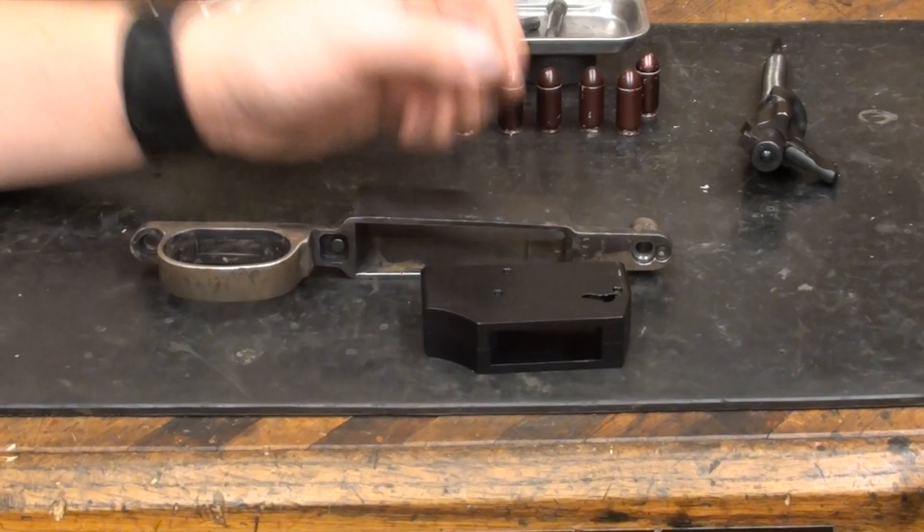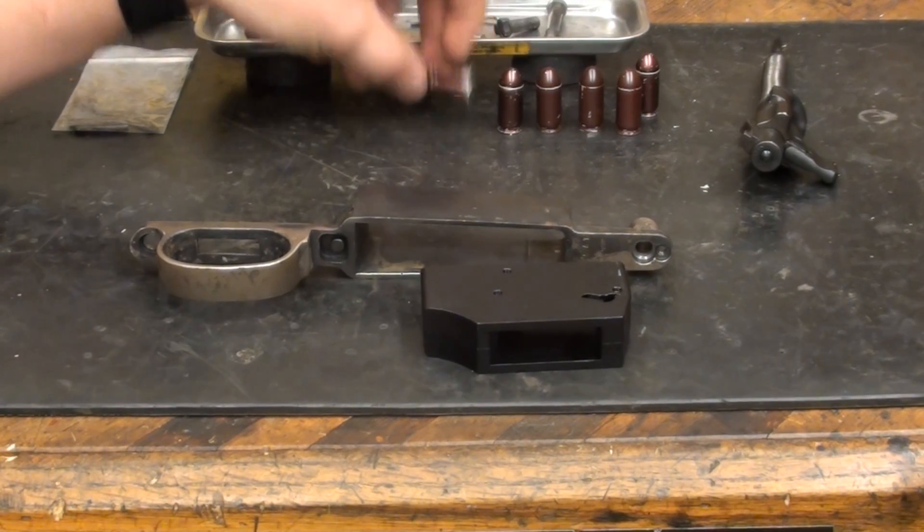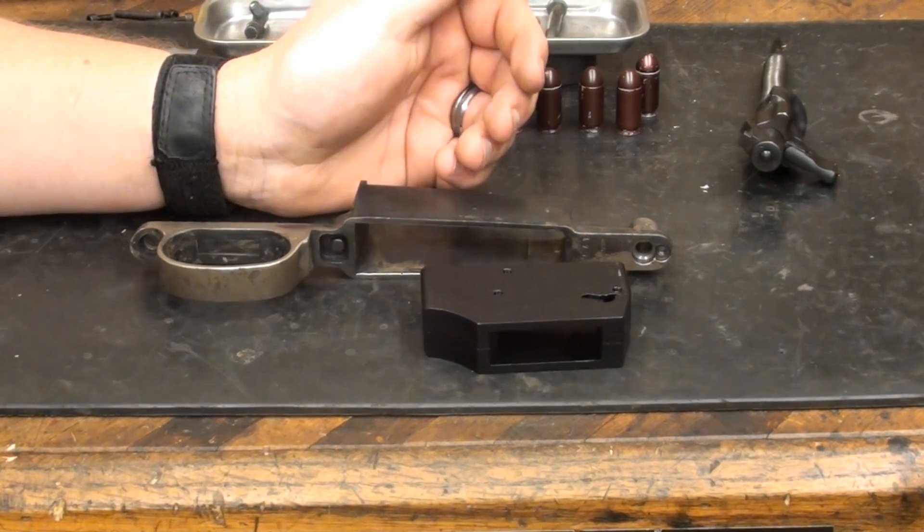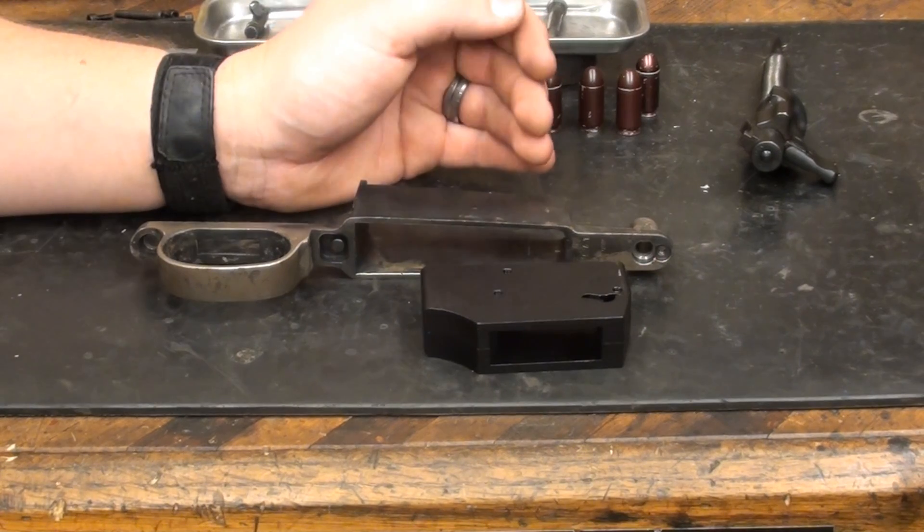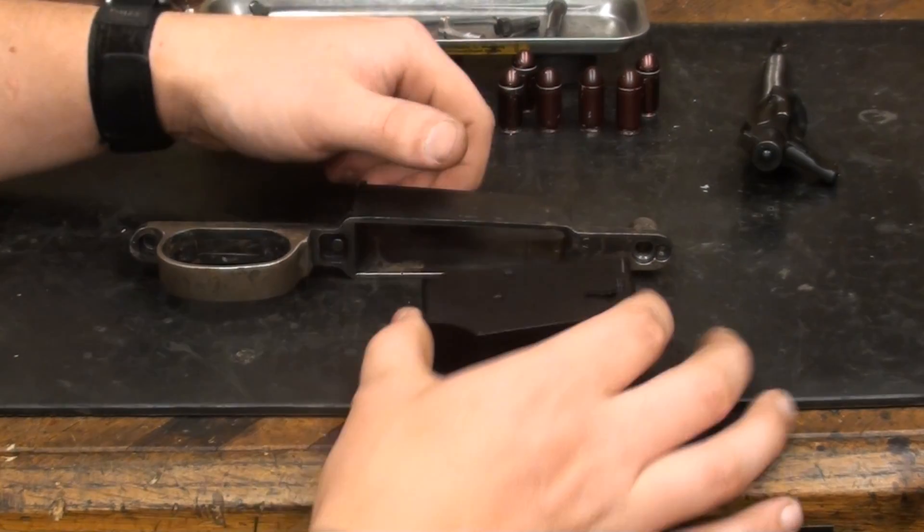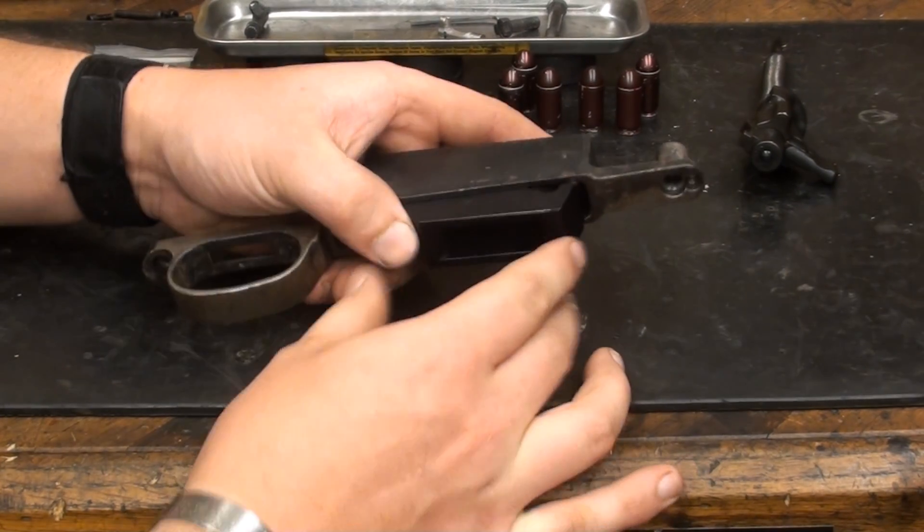Our next step is going to involve installing the magazine. Out of the whole conversion process, this is the most involved part. It'll take you the most time. But if you just get after it and think about what you're doing as you go, it's really not that difficult. This magazine, as you can see, replaces the floor plate on your Mauser.